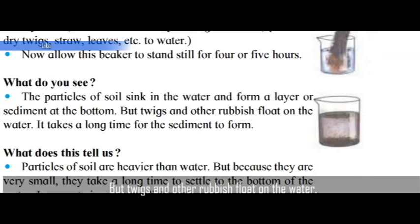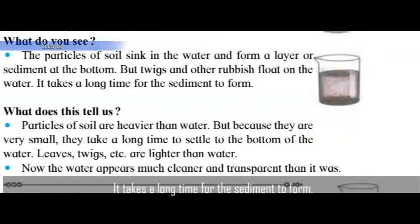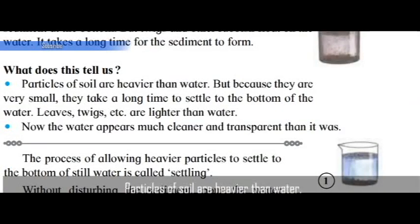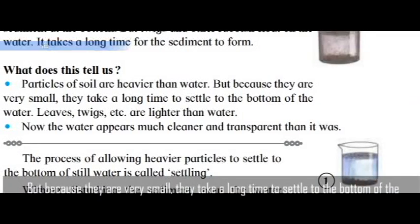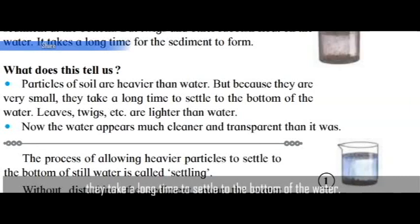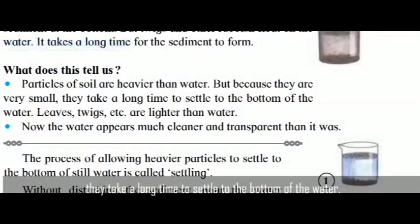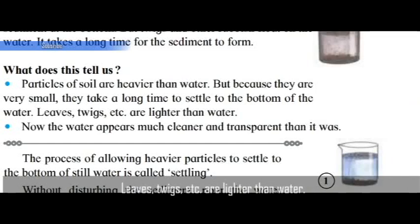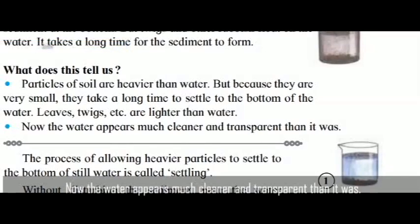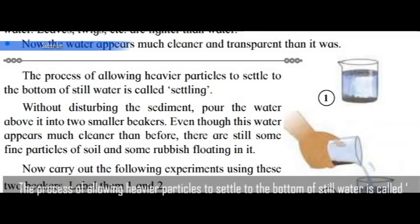The particles of soil sink in the water and form a layer or sediment at the bottom, but twigs and other rubbish float on the water. It takes a long time for the sediment to form. Particles of soil are heavier than water, but because they are very small, they take a long time to settle to the bottom. Leaves and twigs are lighter than water.